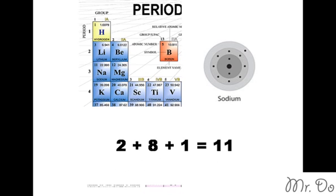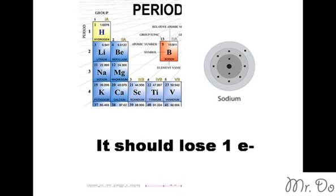So now the question of energy efficiency - is it better to gain seven more in order to fill the octet rule, or is it better to just lose one? That's right. It should lose one electron because it's energy efficient that way.